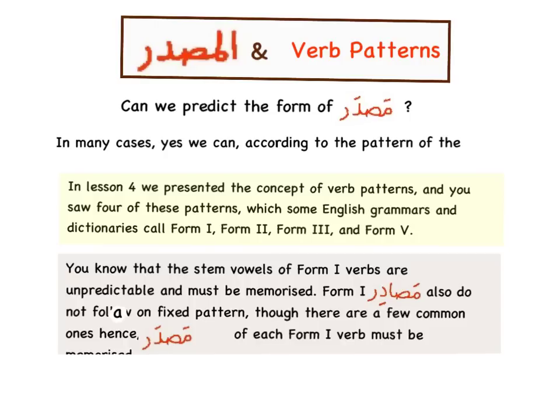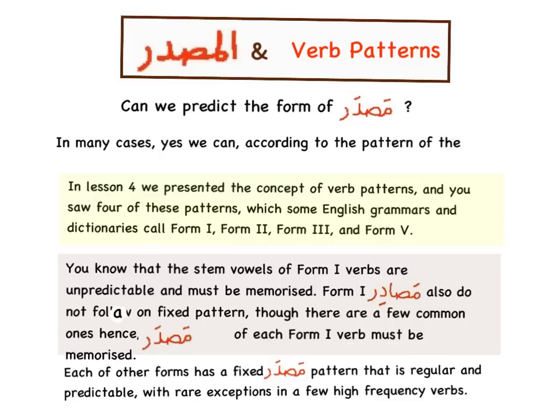You know that the stem vowels of Form 1 verbs are unpredictable and must be memorized. Form 1 Mazdar also do not follow a fixed pattern, though there are a few common ones. Hence, the Mazdar of each Form 1 verb must be memorized. Each of the other forms has a fixed Mazdar pattern that is regular and predictable, with rare exceptions in a few high-frequency verbs.